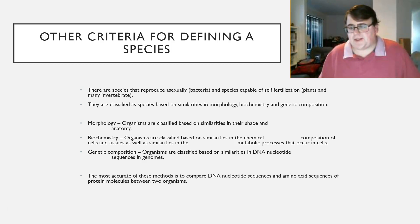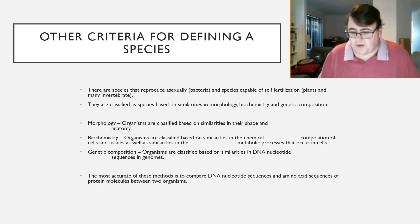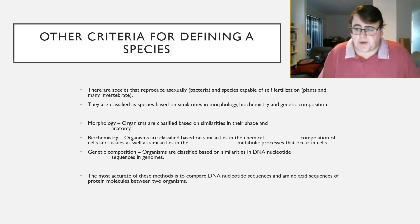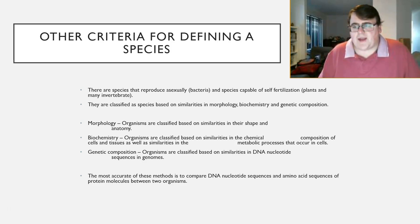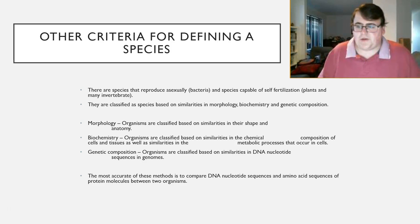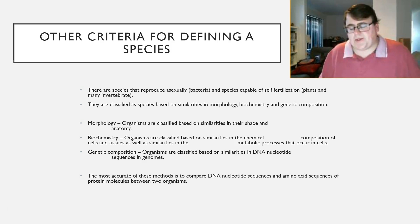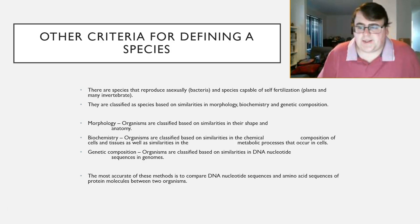Bacteria — we classify bacteria based on their shape, as we looked at in Year 11. Biochemistry: we can also organise species based on their biochemistry, which is basically grouping animals based on the similarities of their chemical composition that makes up their cells and tissues, as well as the similarities between any metabolic processes occurring in those cells.